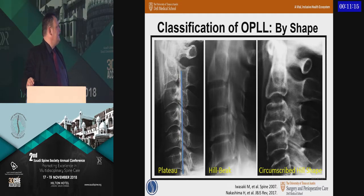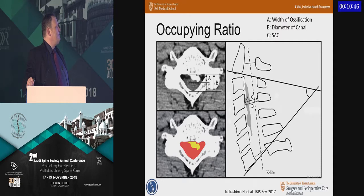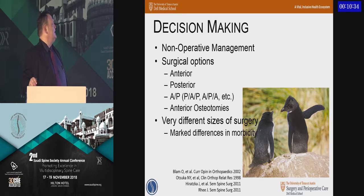The shape is also important. Often you'll see these long plateaus. We know that the sharper the onset of cord compression, the more likely neurologic symptoms are to worsen. Hill-beak-shaped lesions that are more hill-shaped tend to do better than more beak-shaped ones. Circumscribed hill-shaped lesions tend to be the hardest to treat based on their size. We want to know what portion of the canal the OPLL fragment is consuming, and ultimately a nearly level-by-level analysis is helpful to direct management.